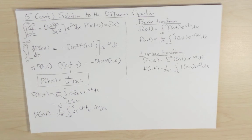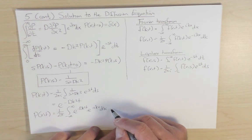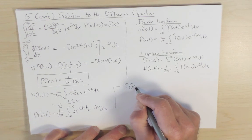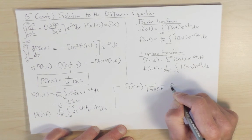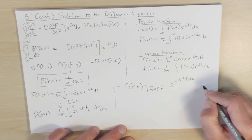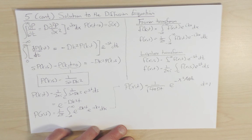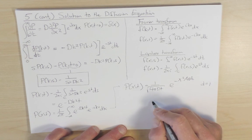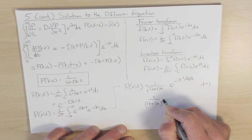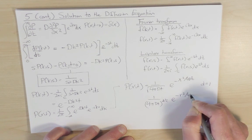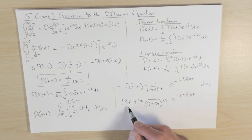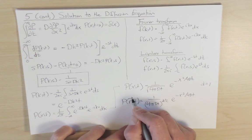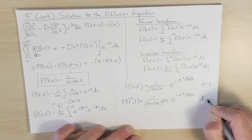An important feature of Fourier transforms is that the Fourier transform of a Gaussian is yet another Gaussian — this is an important exercise you should be able to do. The result of performing this inverse Fourier transform is that p(x,t) equals one over the square root of (4π D t) times e to the minus x squared over 4Dt. This is the result in one spatial dimension. In general d spatial dimensions, the same algebra goes through, and the answer is one over (4π D t) to the power d/2, times e to the minus r squared over 4Dt, where r is the radial position of the random walk.